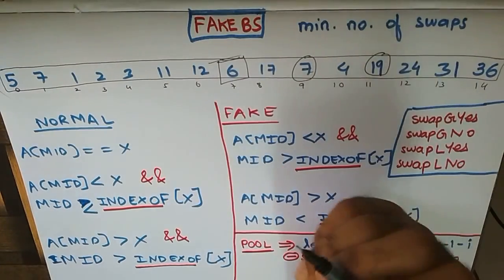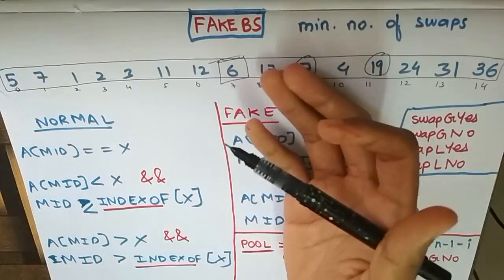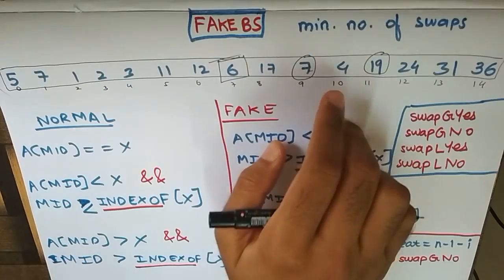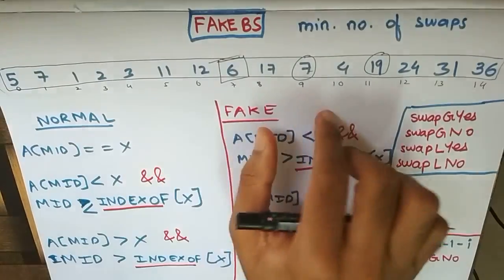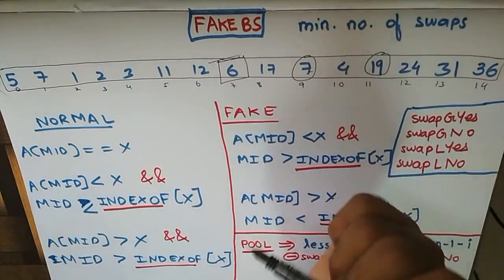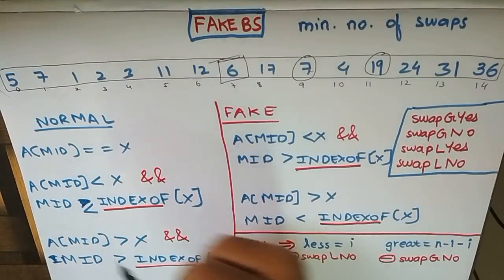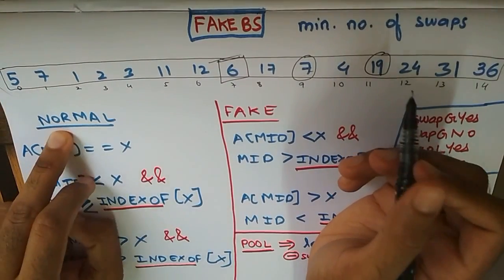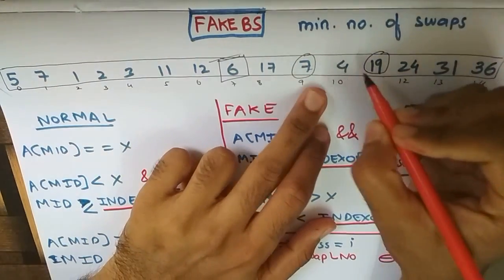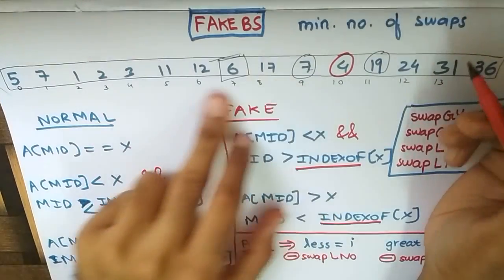Normally binary search only works on a sorted array, but in this case we are asked to find out the minimum number of swaps to perform such that binary search still somehow ends up working. Let's say we have to query the element 4 from this given array.